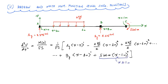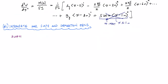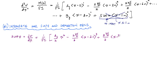Now, applying the same technique as the double integration method, we integrate twice. The first integration gives the slope dv/dx — sometimes written as theta. Integrating the curvature function, the AY term becomes AY over 2 times x² since ⟨x − 0⟩ is just x, active always. The remaining terms integrate accordingly, and a constant of integration C1 is added. Integrating again gives the deflection v, with constant C2 added, giving the slope and deflection equations.